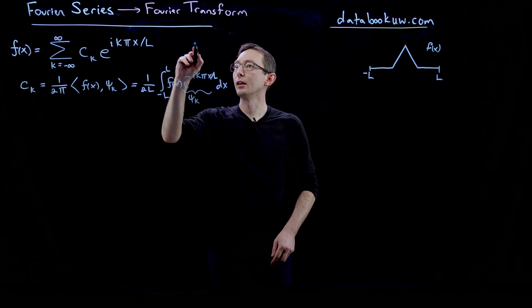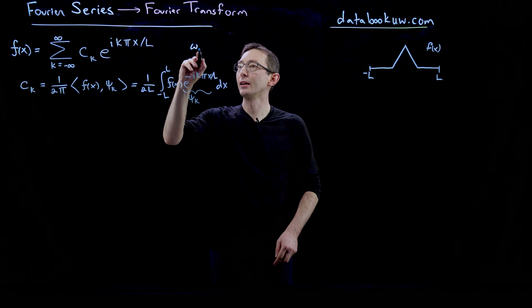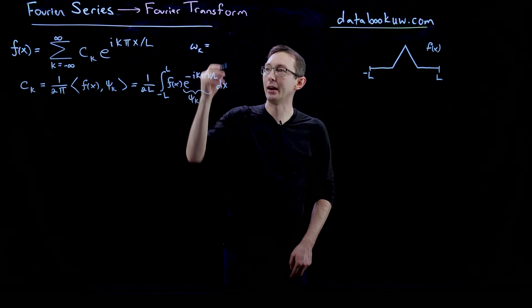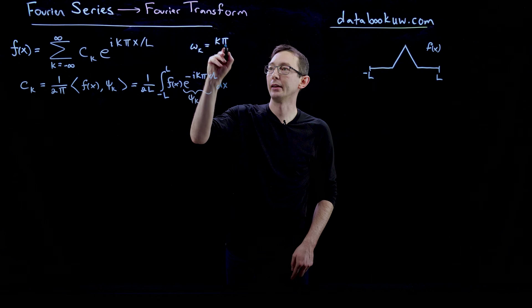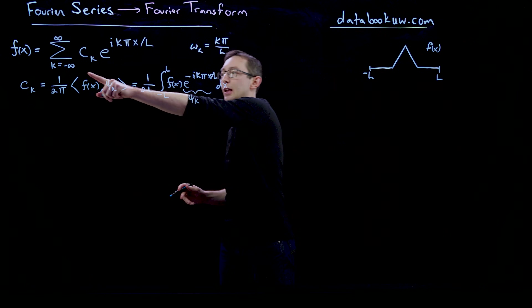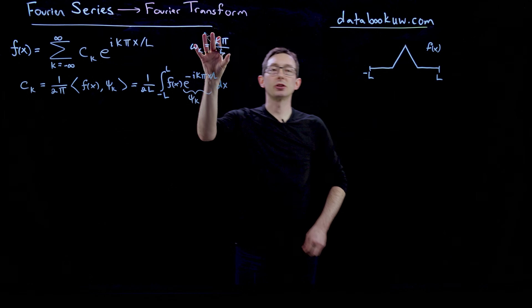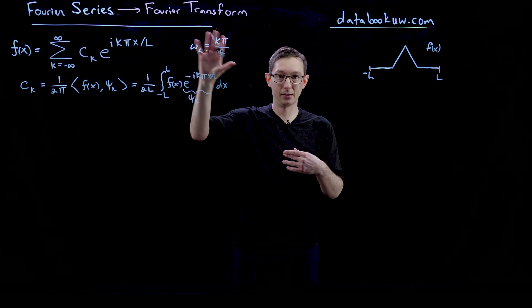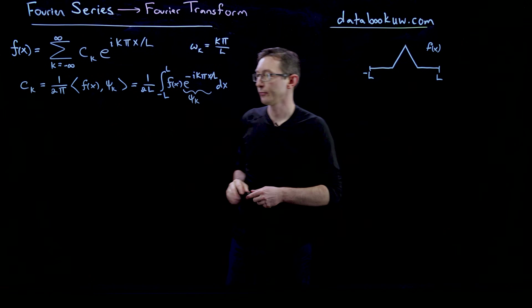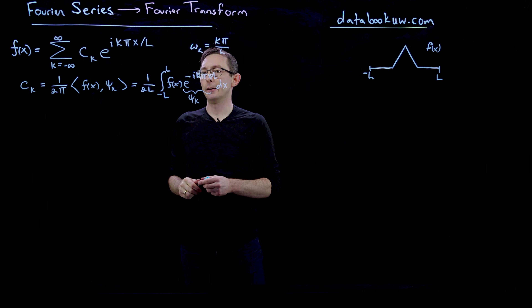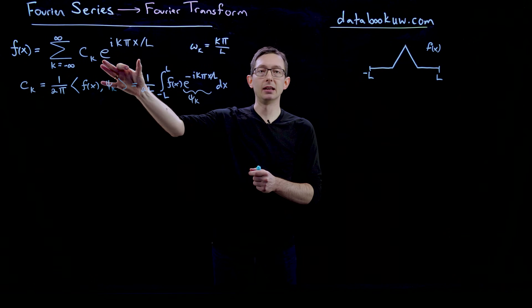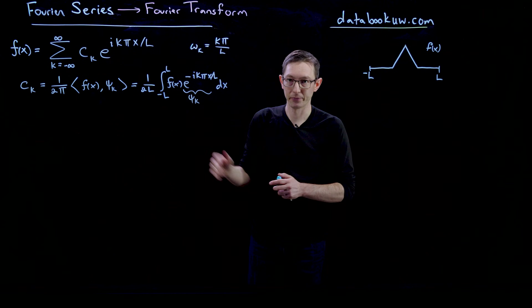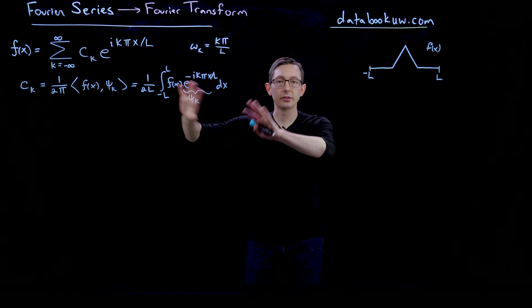This defines a frequency ω_k = kπ/L. So for each k you essentially get cosines and sines at this basic frequency. I'm defining the function e^{ikπx/L} to be called ψ_k. That's the Fourier series — we've covered this.